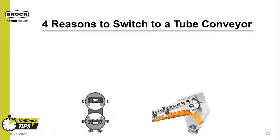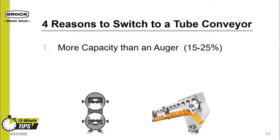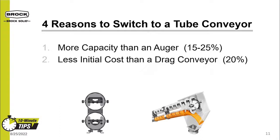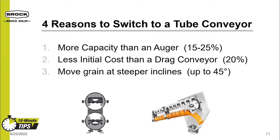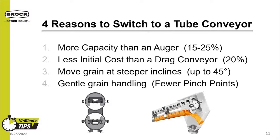A quick review of the four reasons to switch to a tube conveyor: Tube conveyors offer 15 to 25% more capacity than an auger. Tube conveyors cost 20% less than an inclined drag conveyor. Tube conveyors can move grain at steeper inclines than typical drag conveyors. And last, tube conveyors move grain more gently than augers, creating less breakage and damage to the grain.